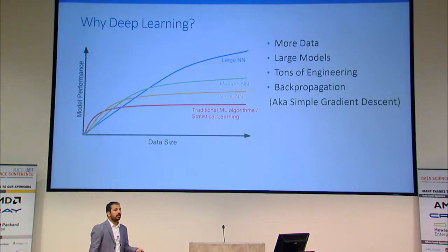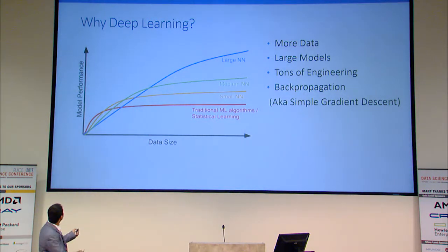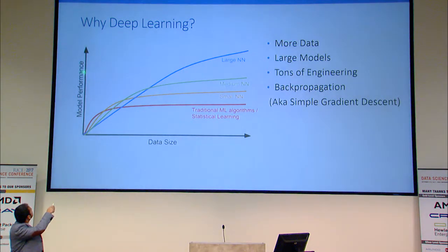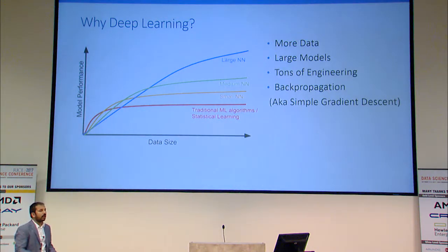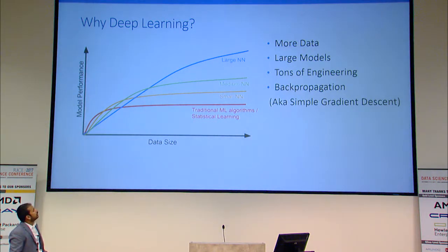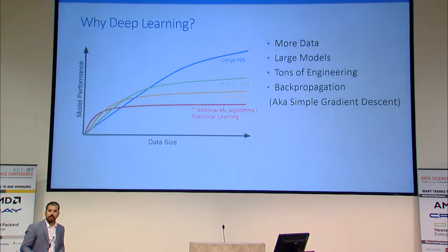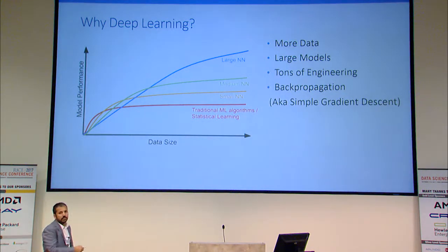This picture is pretty much clear and has appeared in most deep learning talks: if we are in a low-data region, models behave differently. But when we have lots and lots of data, that is really when we start to see an improvement in accuracy. Traditional machine learning models have low capacity, so they saturate quite early. You need really large models. There is a consensus that we need more data, we need large models, and we need tons of engineering — plus the algorithm called backpropagation, which is also gradient descent.